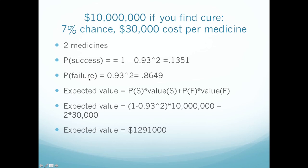For two medicines, you cannot compute success as 0.07 squared — you simply can't. Flipping a coin to get heads is 0.5, but flipping two coins is not 0.5 plus 0.5, or 1. It's not guaranteed you flip two coins and always get two heads. In fact, you only get a head 75% of the time. So it doesn't work that way. We have to look at the probability of failure first: one medicine doesn't cure it and another doesn't — it's 0.93 squared, which evaluates to 0.8649. So the probability of success is 1 minus 0.93 squared: 13.51%.